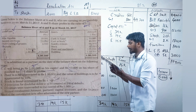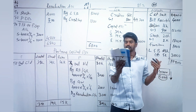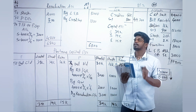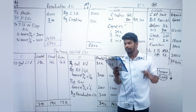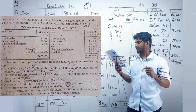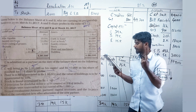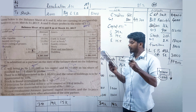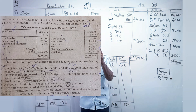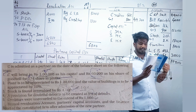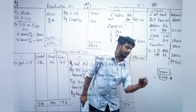The second point: plant is to be appreciated to 1,20,000. Plant is given as 1 lakh, so 20,000 is increasing — write 20,000 on the credit side of the revaluation account. Next, building is to be appreciated — same as discussed in the previous question. Stock overvalued — same treatment. Provision for doubtful debts — straightaway debit side of the revaluation account.